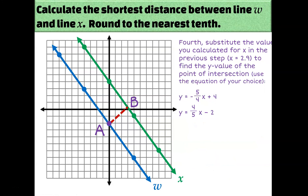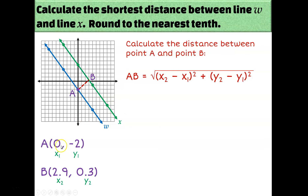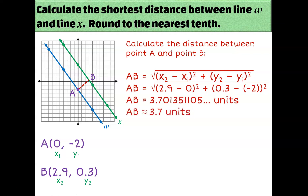Now let's find the Y value. I'll take 2.9 and plug it into the second equation, and I get approximately 0.3 — which seems reasonable because B isn't very high off the X-axis. So B is the point (2.9, 0.3). Plugging those coordinates along with A at (0, −2) into the distance formula to find the distance from line W to line X, it turns out to be approximately 3.7 units.